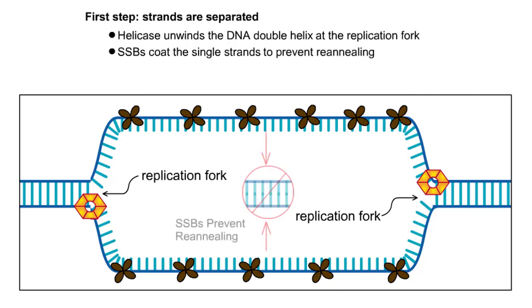Without the SSBs, the complementary DNA strands could easily snap back together. SSBs bind loosely to the DNA and are displaced when the polymerase enzymes begin synthesizing the new DNA strands.